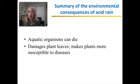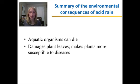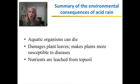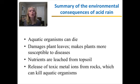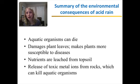To summarize the main environmental consequences of acid rain: aquatic organisms die. Acid rain damages plant leaves and the protective cuticle, making plants more susceptible to diseases — they can't photosynthesize as well and they can die. Nutrients also get leached from topsoil, because acidic soil cannot hold nutrients as well. Additionally, when soil gets acidic, toxic metal ions can be released from rocks, which can make their way into water supplies, kill aquatic organisms, and affect human health when we drink the water.